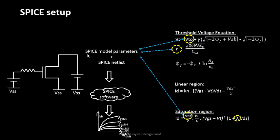The SPICE setup requires providing the SPICE model parameters — the technology constants — in a special way, and the SPICE netlist in a special way. We call it a SPICE deck. The MOSFET cannot be provided as-is; there is a special syntax to provide it to the SPICE engine. Once you combine the SPICE netlist and SPICE model parameters and feed them to the SPICE software, you get the output waveforms.